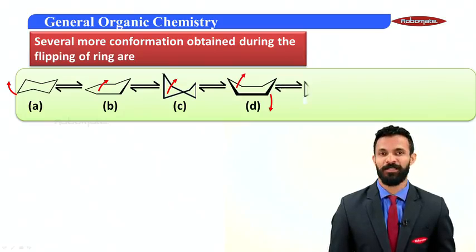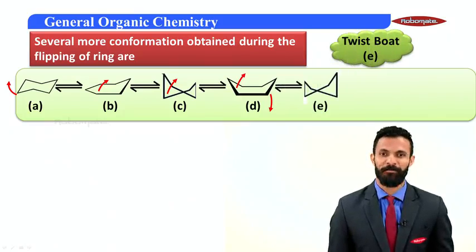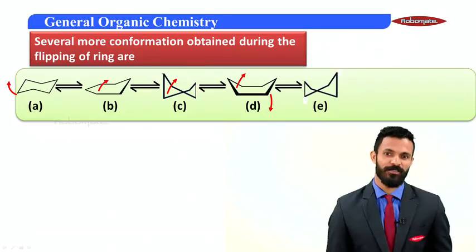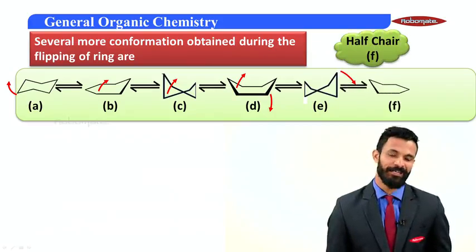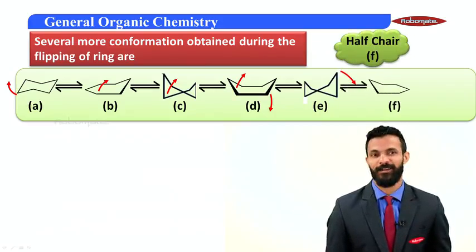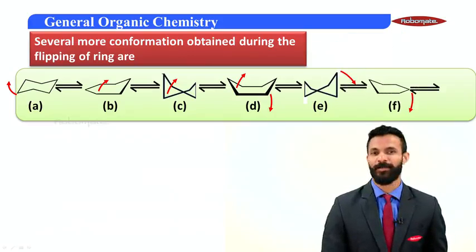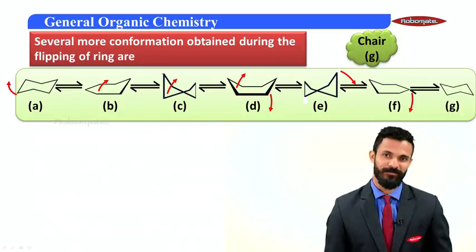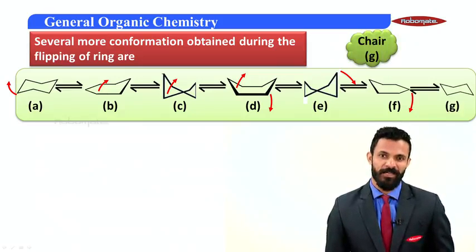This boat on further rotation gets converted to a new conformation, which is again a twist boat — just like a mirror image. This twist boat further gets converted to a half chair conformation, and ultimately this half chair conformation gets converted to the other extreme end of a chair conformation.